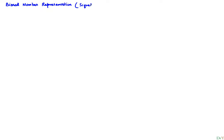In this video I will discuss the biased number representation that is used for signed numbers, particularly exponents in the floating-point standard, which is the IEEE 754 standard.